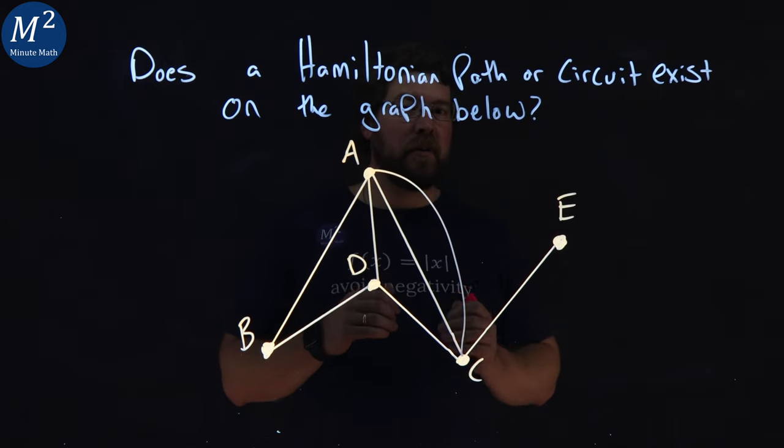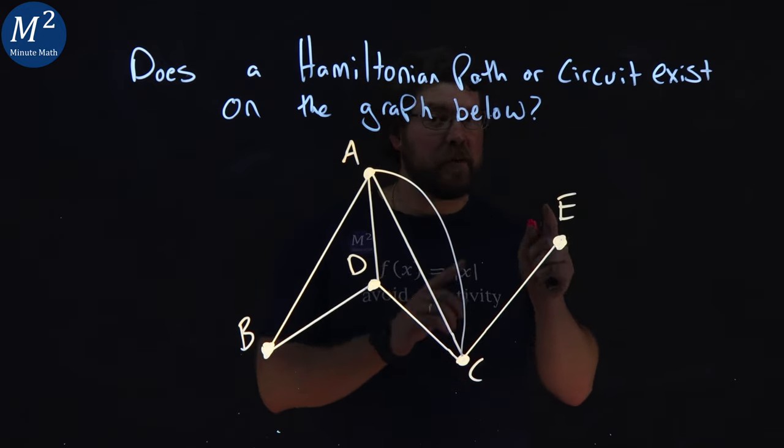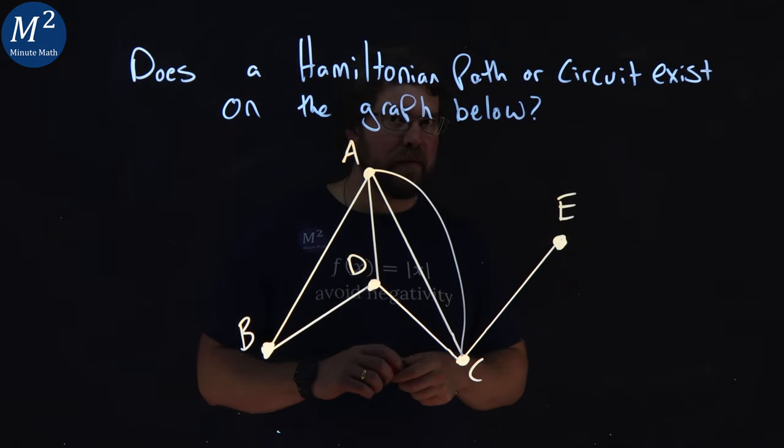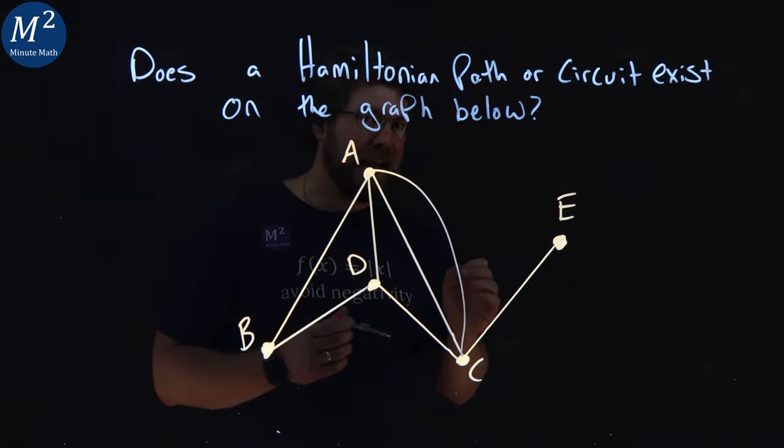Remember, Hamiltonian paths and circuits have to hit every single vertex without a repeat. A circuit, though, cannot happen here.